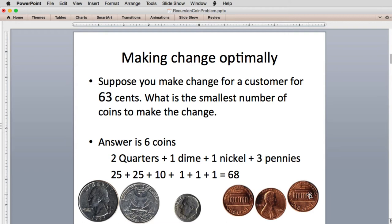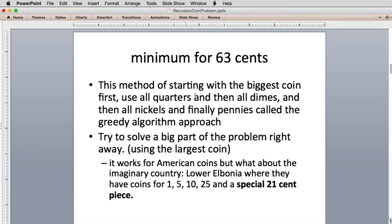If you've studied this problem in a beginning computer science class, you know what you do is you take your largest coin, the 25 cent, and you see how many times does that go into 63. So you always use the largest coin first until you have something less than 25 cents. So if you do that twice, that reduces it to 13 cents. Then you look at the next largest coin, you can use one dime, and you're left with three cents and you use three pennies. The method of starting with the biggest coin first, using all the quarters, then all the dimes, then all the nickels, and finally the pennies, is called the greedy algorithm approach.